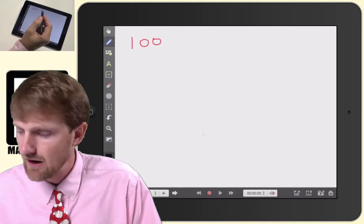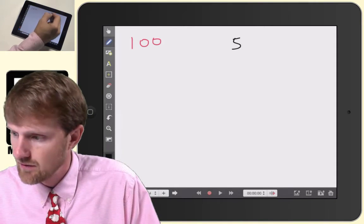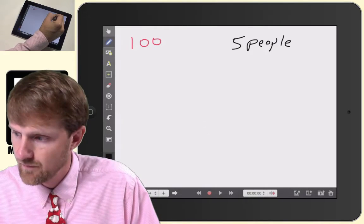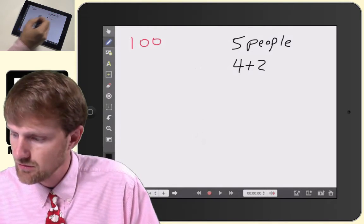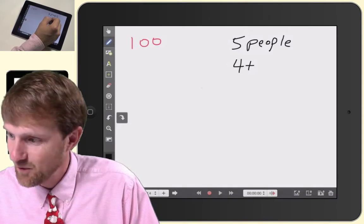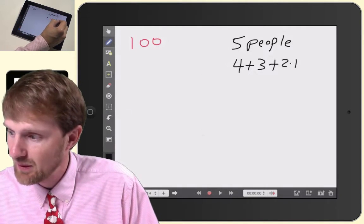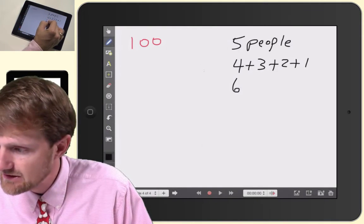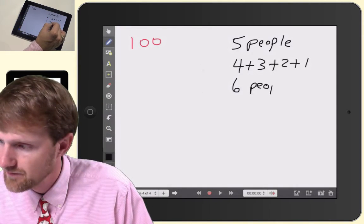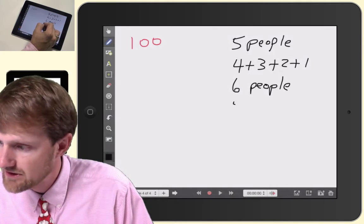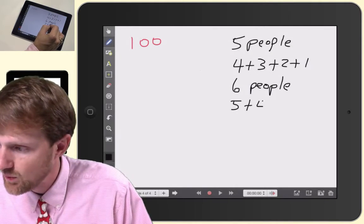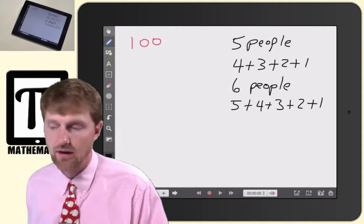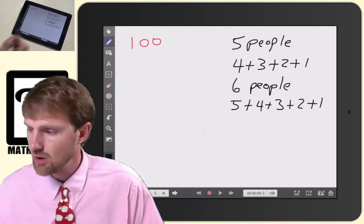And what you notice is you notice that we have our five. When we did five earlier, we had five people, we ended up going four plus three plus two plus one. If we had six people, we would say five plus four plus three plus two plus one. And then we would have our total there.